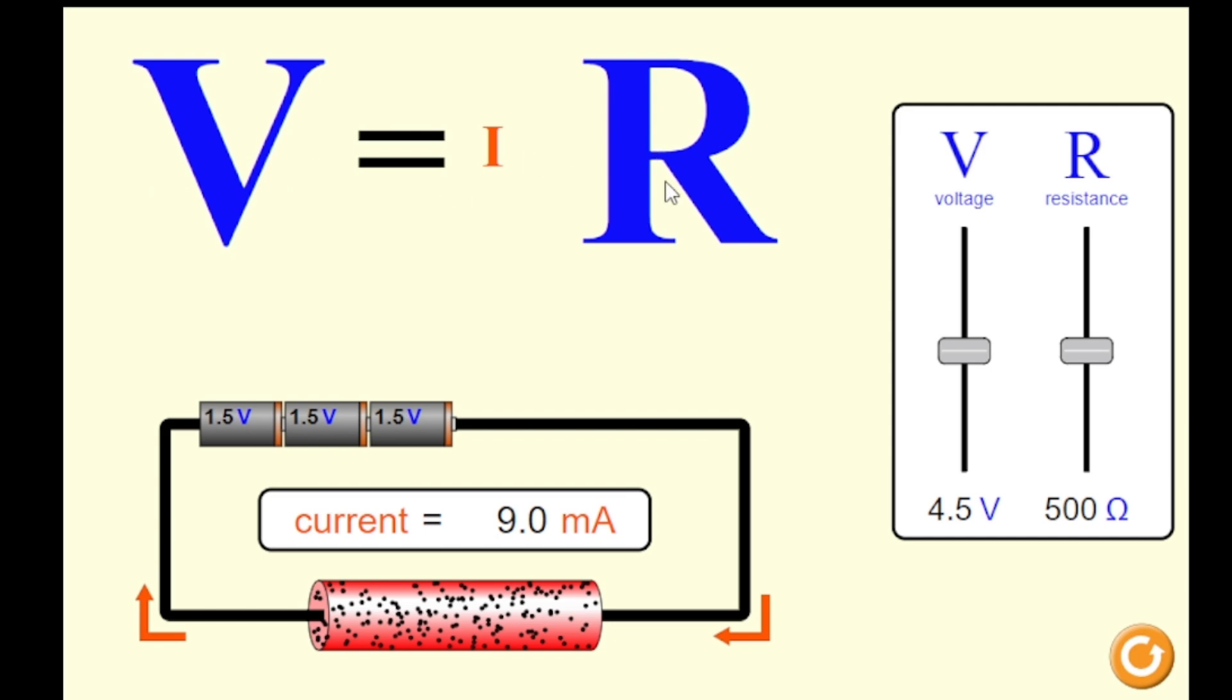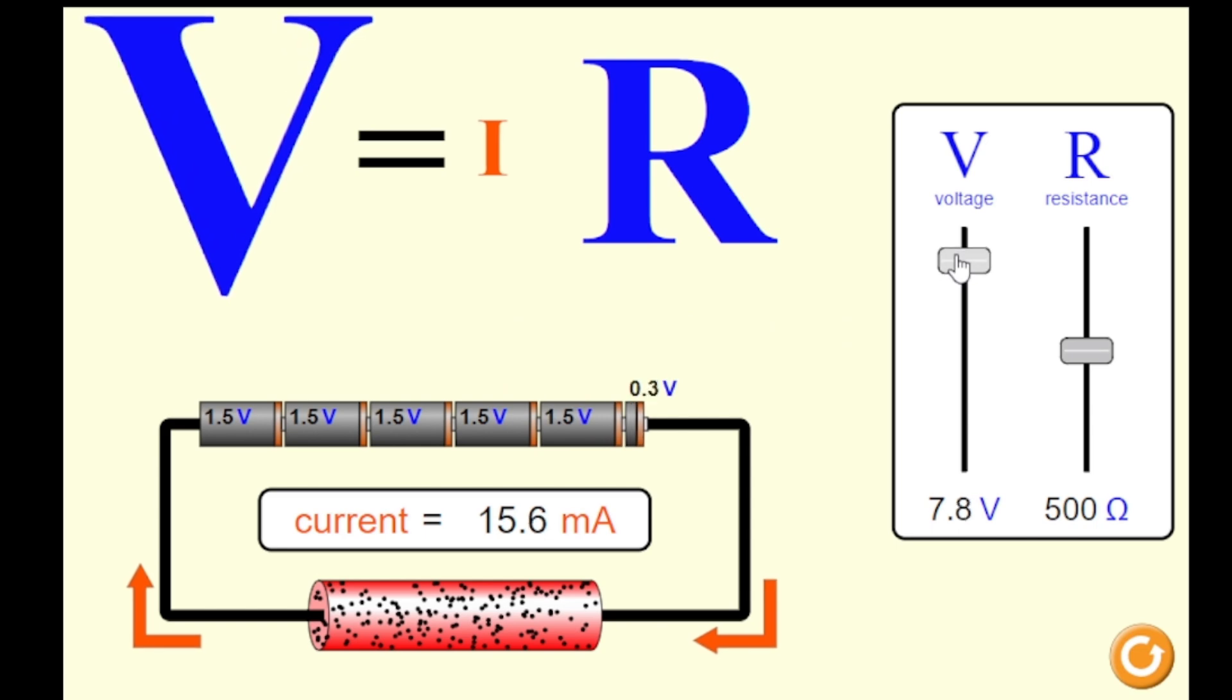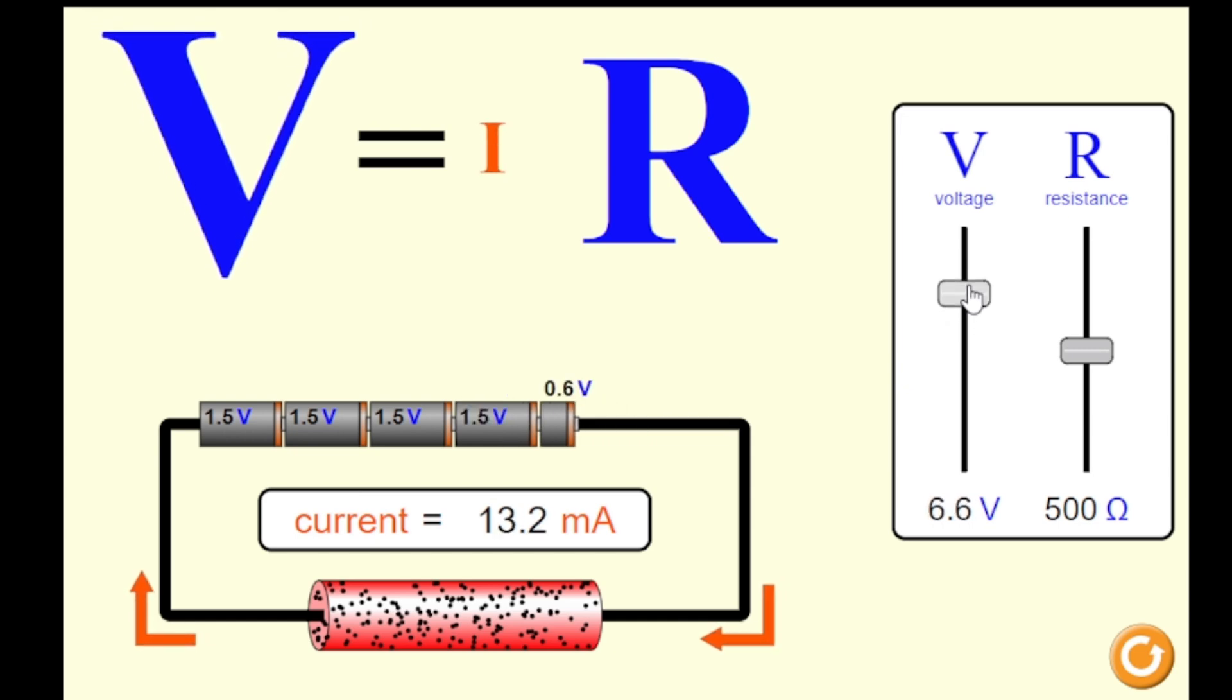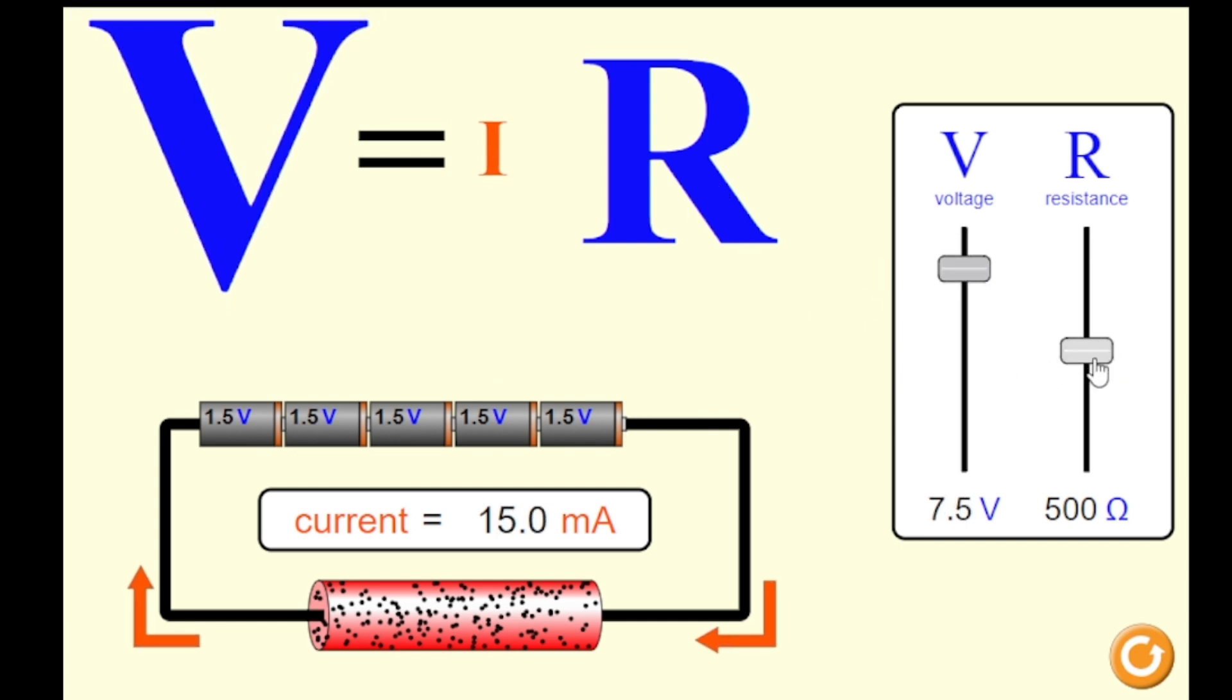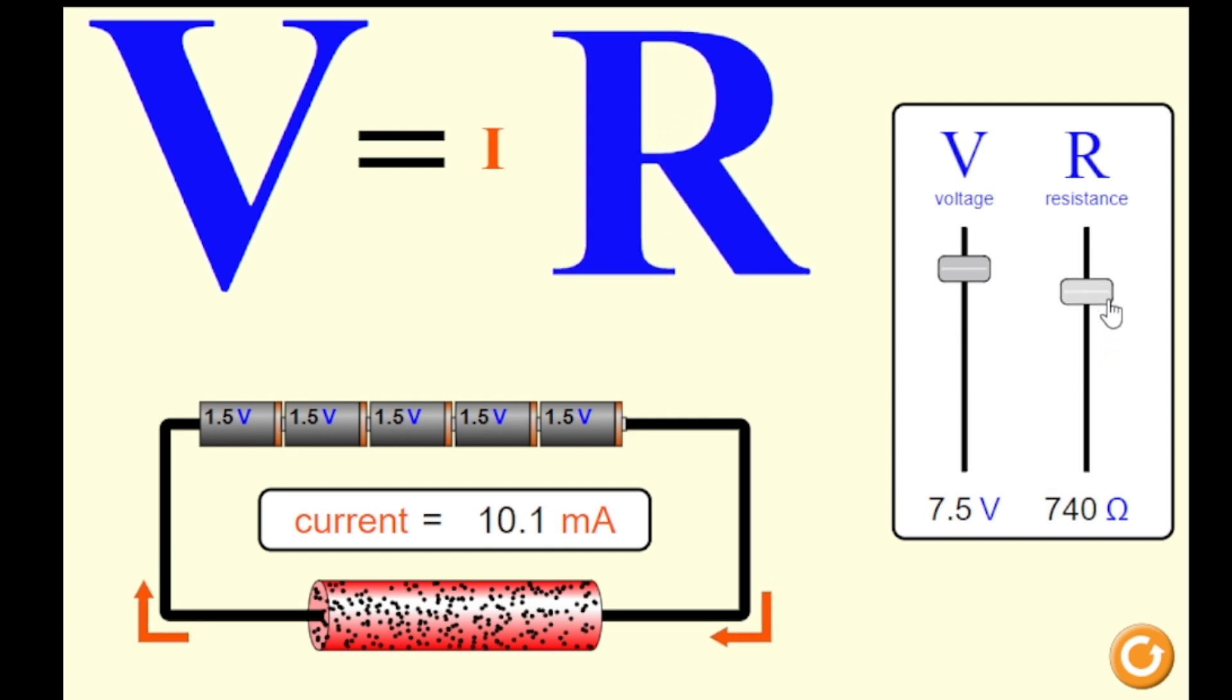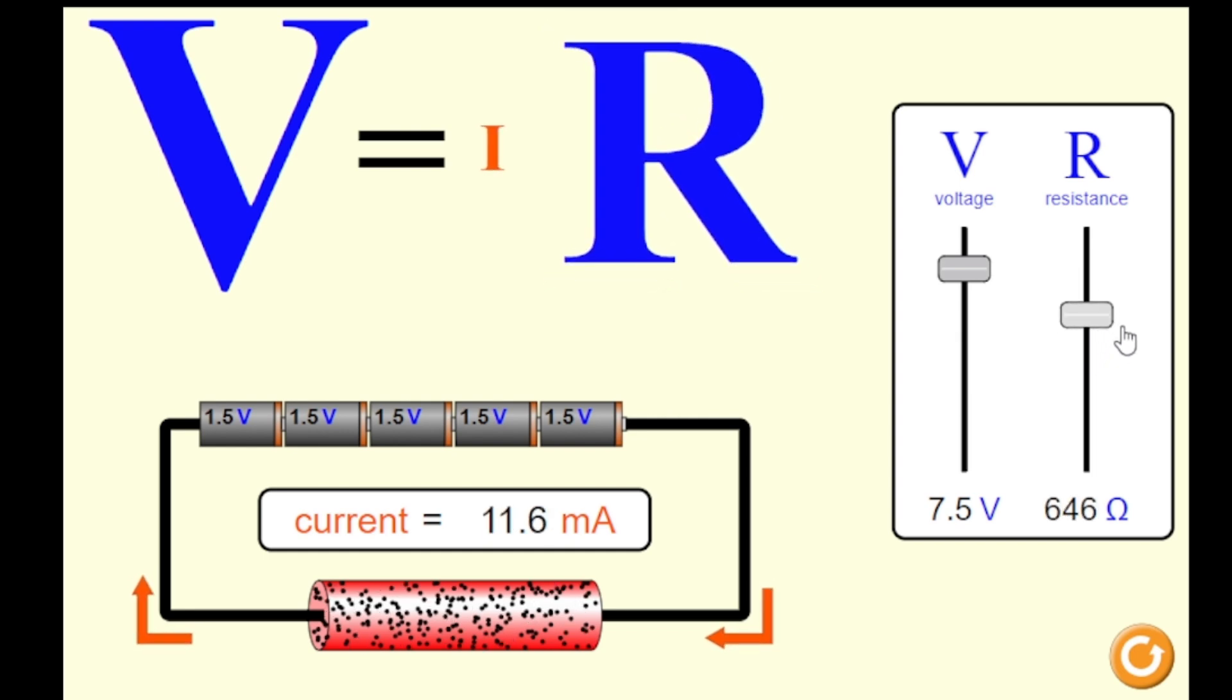If we observe, if we increase the value of voltage, your current increases also. If we increase the value of resistance, what is the effect of the resistance? As you can see here, the dotted lines represent the number of current.